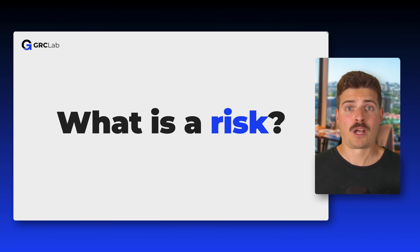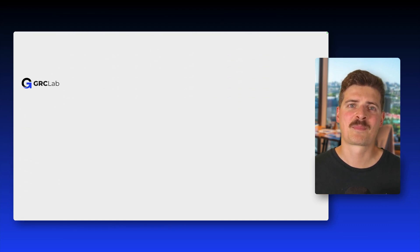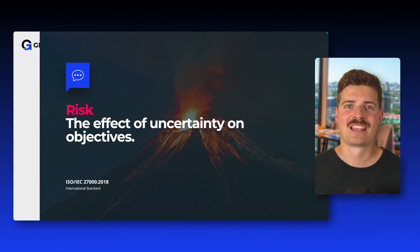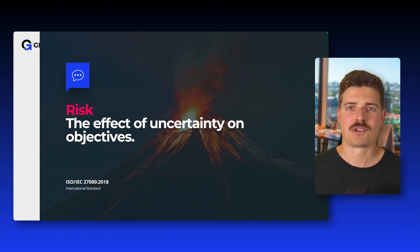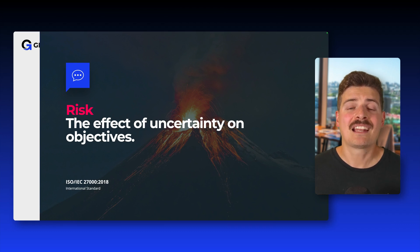Risk is a term we often hear and use in our daily lives, but do we really understand what it means and how it affects us? Let's start with the official definition of risk from ISO: it is defined as the effect of uncertainty on objectives. That might sound abstract at first, but it's actually a very flexible and powerful concept. Any time we're working toward a goal, there's some level of uncertainty — something might go wrong, something unexpected could happen. That's what we call a risk.